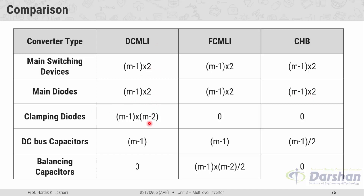For clamping diodes, DC MLI requires (M-1)×(M-2) diodes, whereas flying capacitor MLI requires no clamping diodes, and the same applies to CHB. For DC bus capacitors, DC MLI requires M-1, FC MLI also requires M-1, but CHB requires (M-1)/2 capacitors. For balancing capacitors, DC MLI requires none, FC MLI requires (M-1)×(M-2)/2 balancing capacitors, whereas CHB does not require a single balancing capacitor. This completes the comparison among the three types of multilevel inverters.